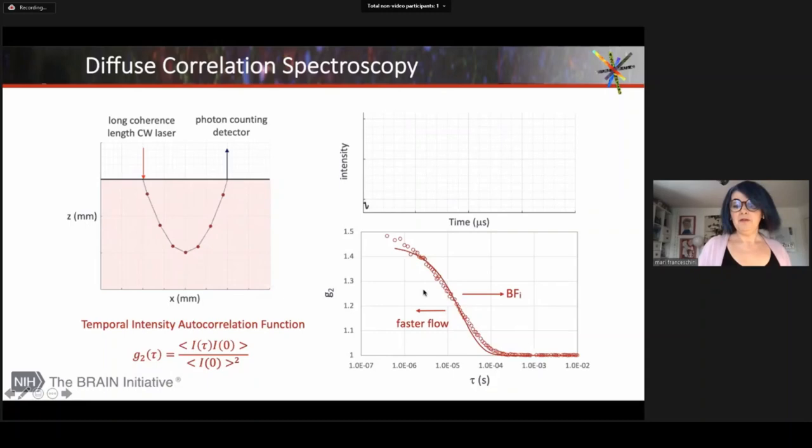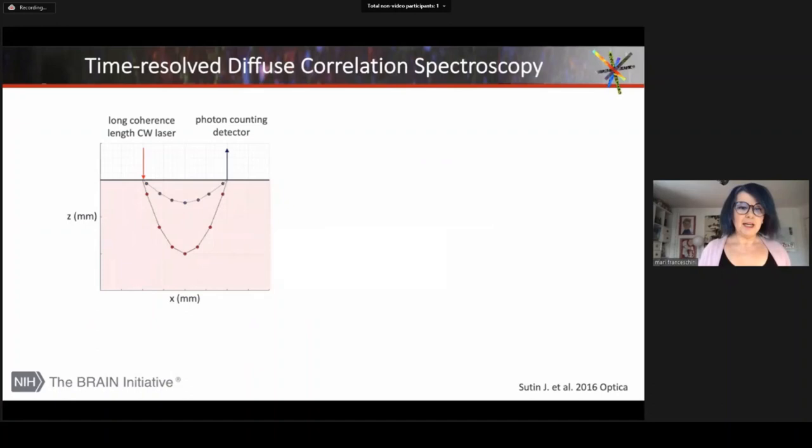The problem is that when we look at tissue with continuous wave methods, we cannot differentiate between the long path and the short paths.